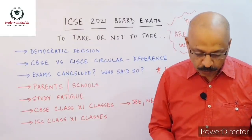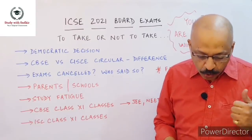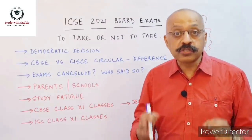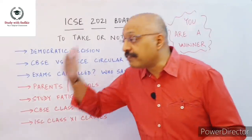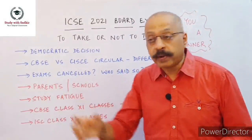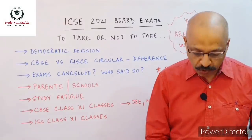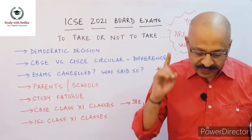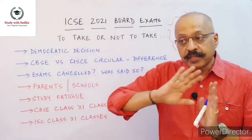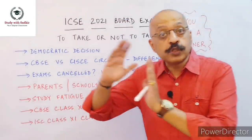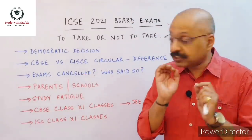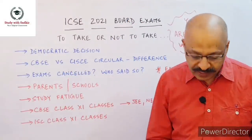The ICSC council circular is very different. It has not used the word 'cancelled' anywhere. Whoever is saying that ICSC has cancelled its board examination is wrong — grossly wrong. What they have said is they are deferring the examination. The word used is 'defer' — deferment means postponement, it does not mean cancellation. What they have said is that a final decision on the conduct of both Class 10 and Class 12 examinations will be taken in the first week of June. They have postponed the decision, not cancelled the examination. That's the big difference between CBSC and the ICSC council.